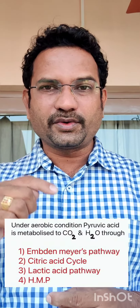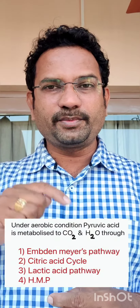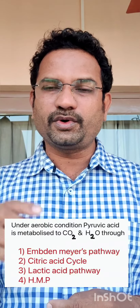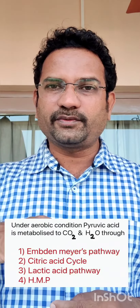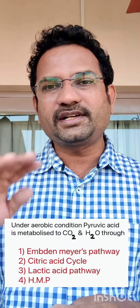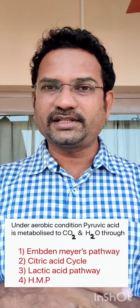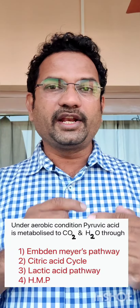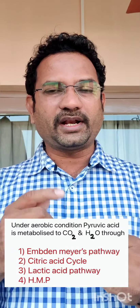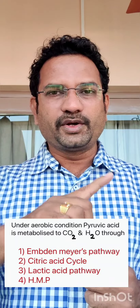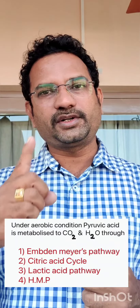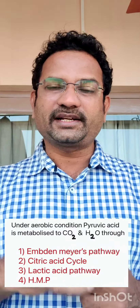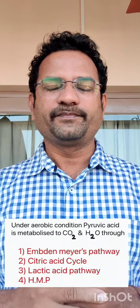So the answer for the question: under aerobic condition, pyruvate is converted to CO₂ and H₂O through the citric acid cycle. What about the other options? Lactic acid pathway — under anaerobic condition, when oxygen is not available, pyruvate is converted to lactate or lactic acid. That is called the lactic acid pathway.